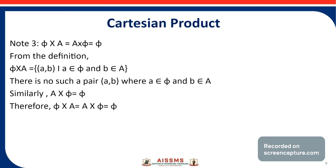One more note: ∅ × A = A × ∅ = ∅. By the definition of Cartesian product, ∅ × A consists of all ordered pairs (a, b) where a belongs to ∅ and b belongs to A. Since there is no element in the empty set, no such pair exists. Therefore ∅ × A = A × ∅ = ∅. This is all about the Cartesian product. Thank you.